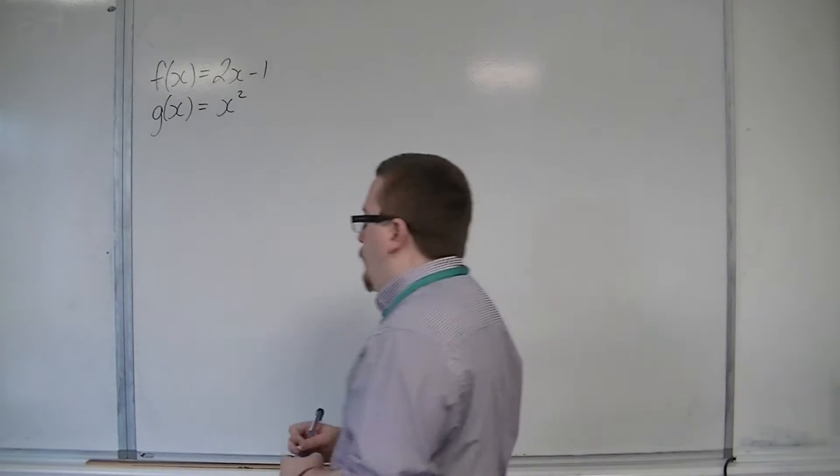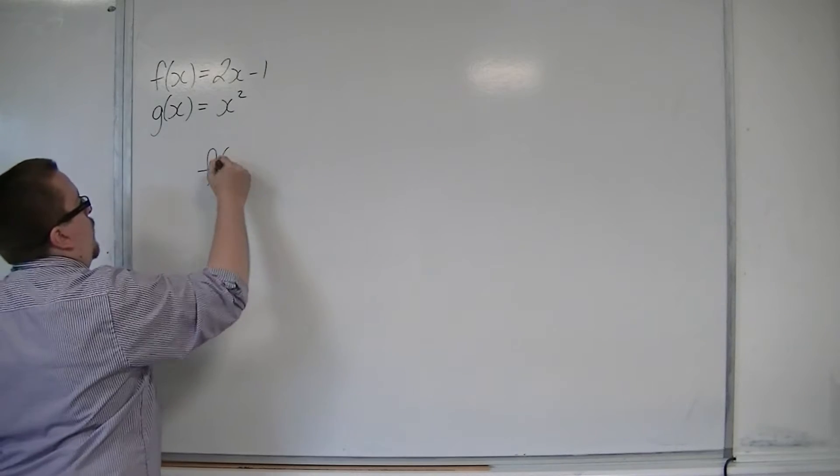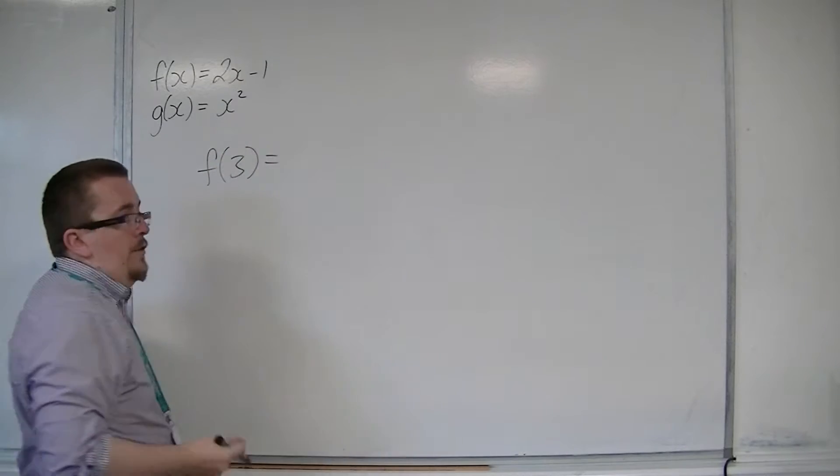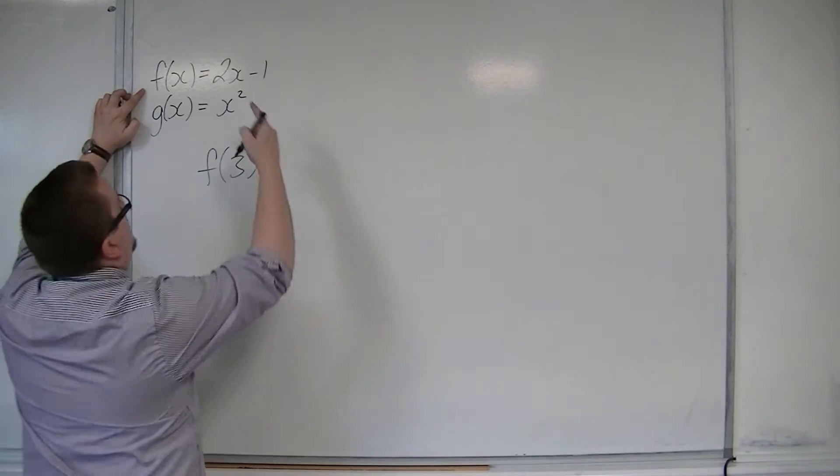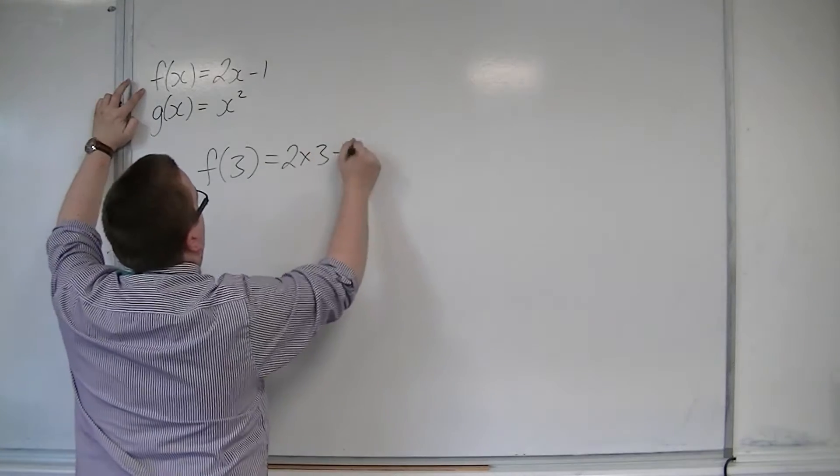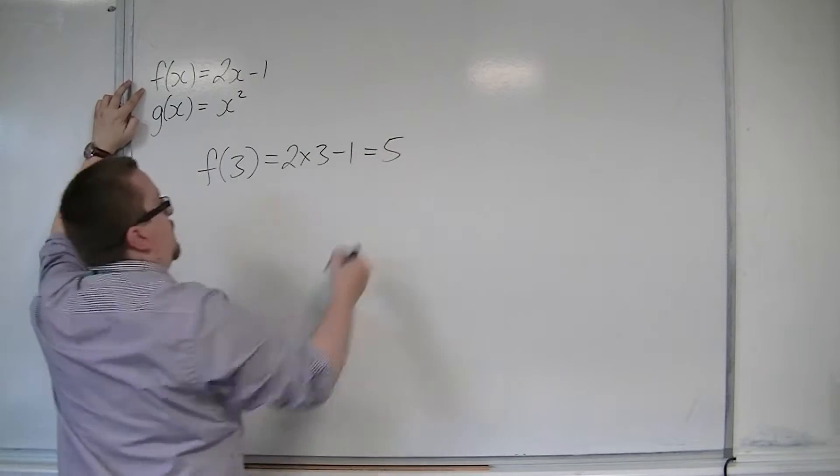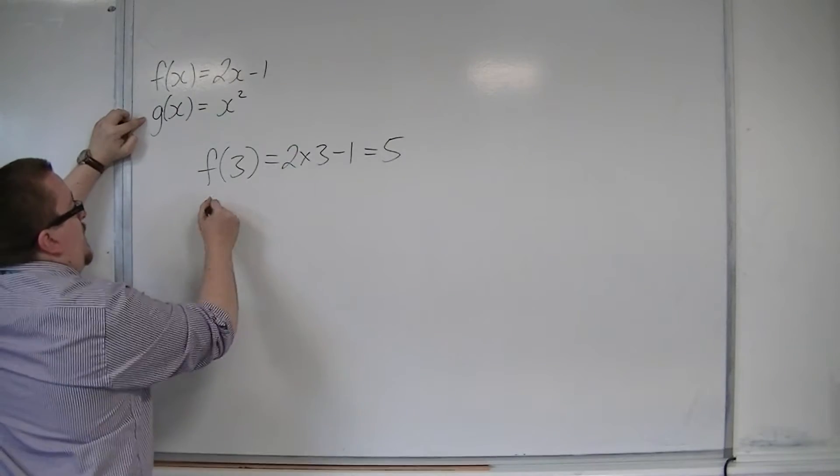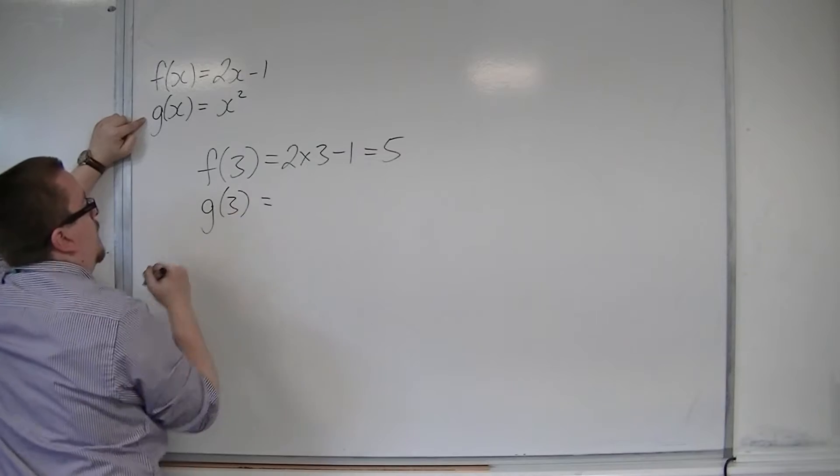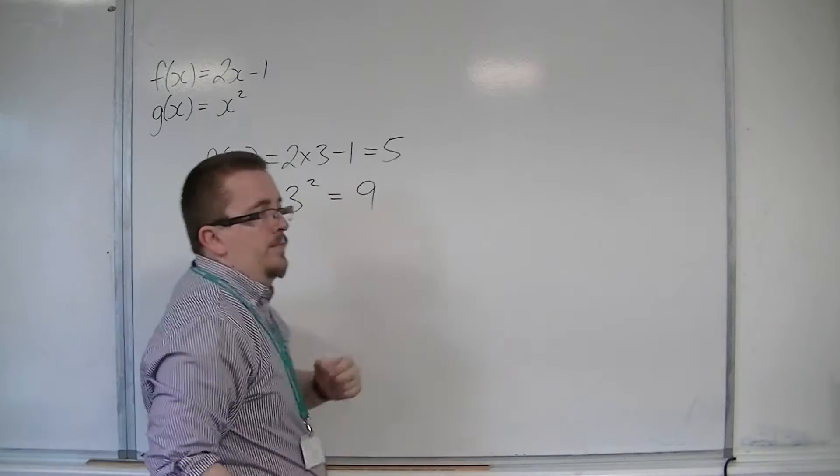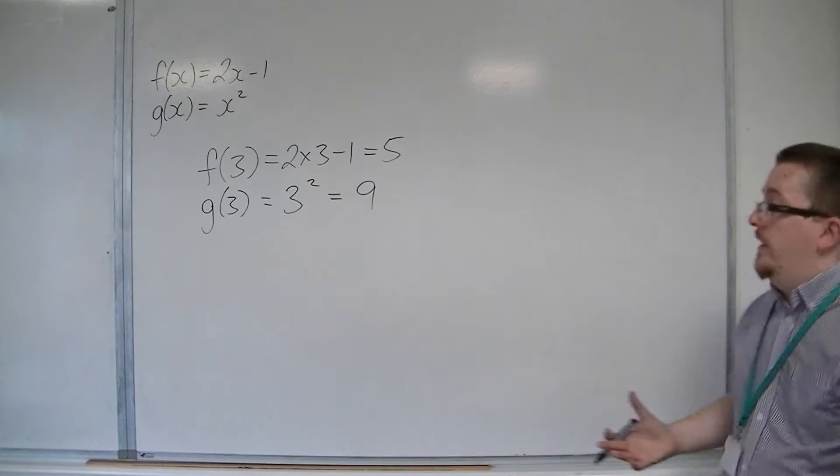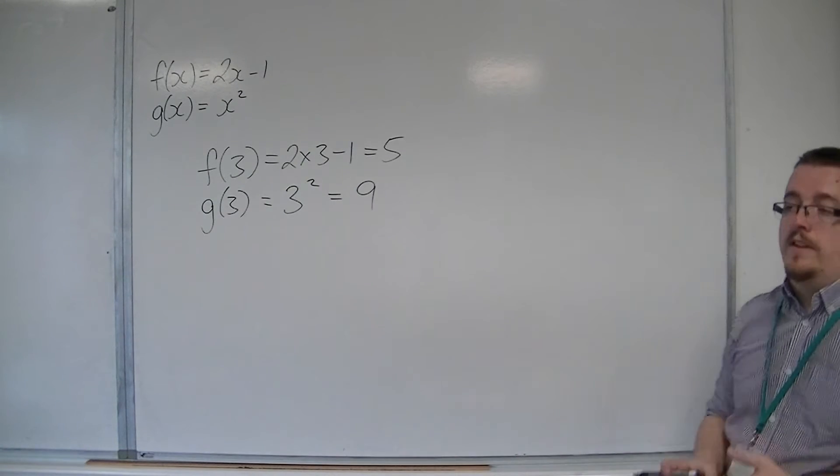So let's go through some of the basics first. We can work out f of 3 very easily, substituting 3 into f of x. So this is 2 lots of 3, take away 1, so that's 5. Now, if I was looking at g of 3, then this would be 3 squared, which is 9. So very easily, we can write down what f of 3 and g of 3 would be.